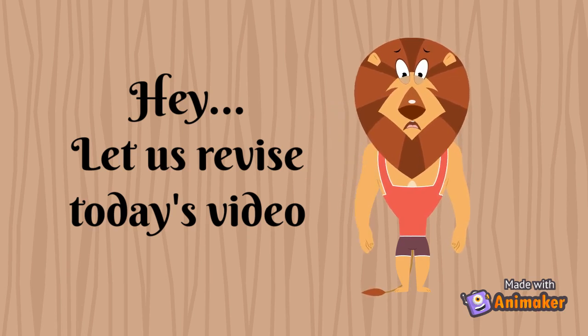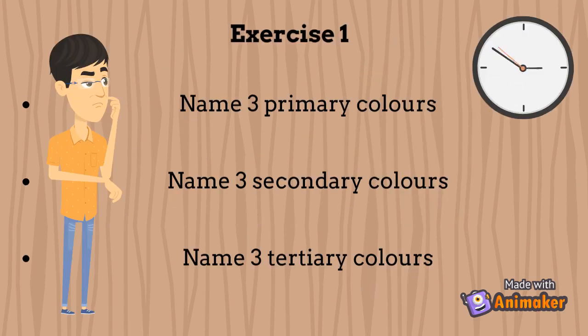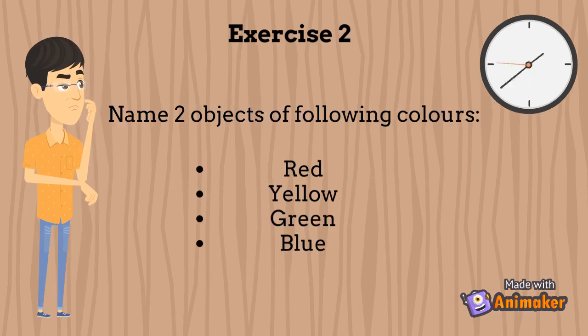Let us revise today's video. Exercise 1: Question number 1, name three primary colors. Question number 2, name three secondary colors. Name three tertiary colors. Exercise 2: Name any two objects of following colors - red, yellow, green, blue.